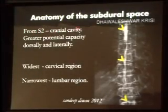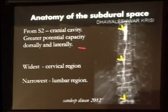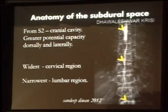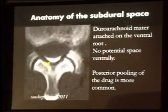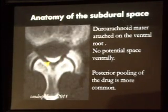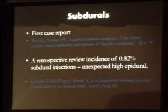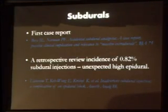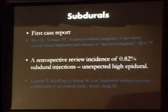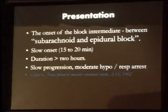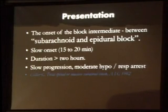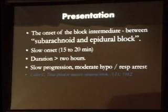The subdural space extends from S2 to the cranial cavity. It has greater potential capacity dorsally and laterally — that is why contrast more commonly lies in the dorsal and lateral positions. It is widest in the cervical and thoracic-cervical area and narrowest in the lumbar region. There is no anterior or lateral spread; posterior pooling of drug is most common. The first case report was in 1975, and the incidence of subdural blocks is 0.82%. Predisposing factors include excessive manipulation, prior back surgery, recent lumbar puncture, and rotating the epidural needle.